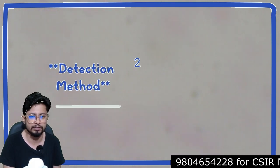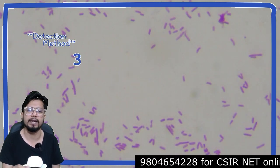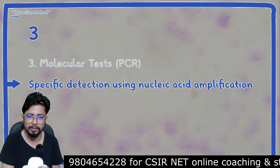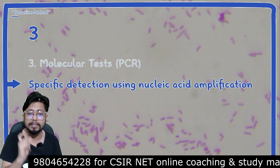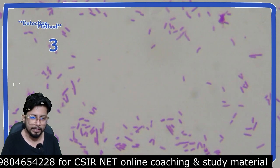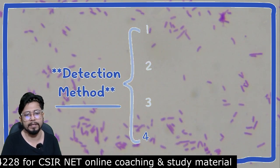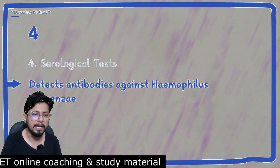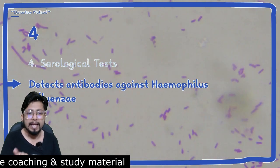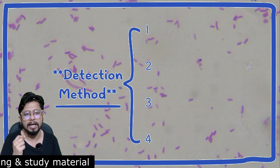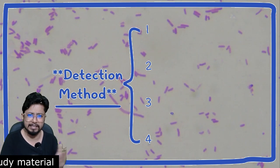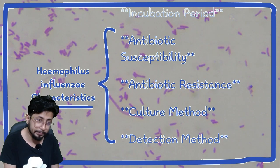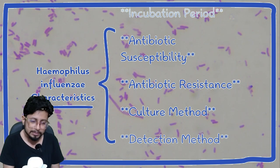The third detection method is molecular testing like PCR — polymerase chain reaction — which detects nucleic acid by amplification. The fourth method is serological testing, which detects antibodies against Haemophilus influenza using tests such as ELISA.